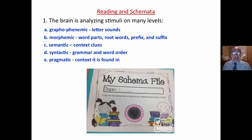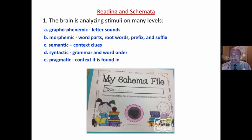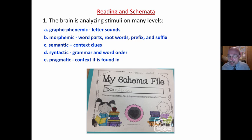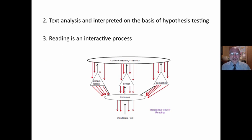Reading and schemata. When you are reading, the brain is analyzing stimuli on many levels. You're looking at the letter sounds — graphophonemic. You're looking at word parts, morphemes, the smallest unit of meaning — roots, prefixes, suffixes. You're also looking at context clues, semantics. Syntax — that's grammar and word order. And pragmatics, the context that it is found in. For example, 'it was a long run' — the meaning depends on the context: a long run in the stocking, a long home run, a long running run. So pragmatics is part of analyzing the message.